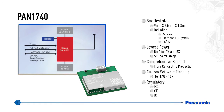Let's start with a quick overview of the PAN 1740. The PAN 1740 is an advanced Bluetooth smart module. It offers one of the smallest sizes available at 9 by 9.5 millimeters with a thickness of below 2 millimeters. It also offers one of the lowest power consumptions in the market, with 5 milliamps for transmit and receive.